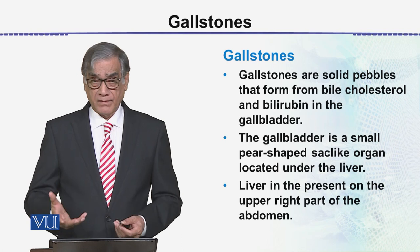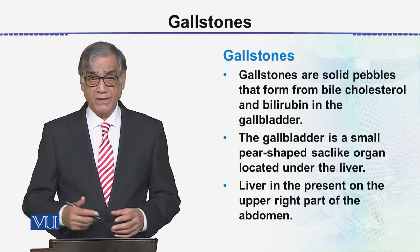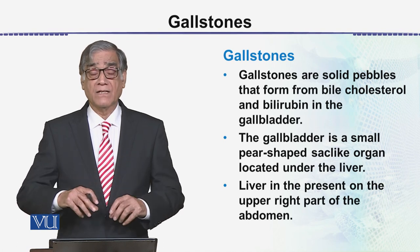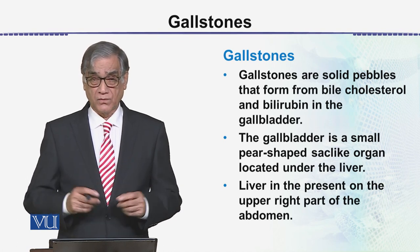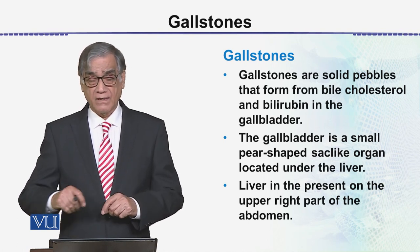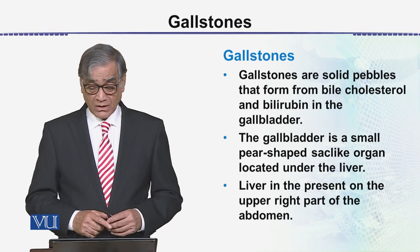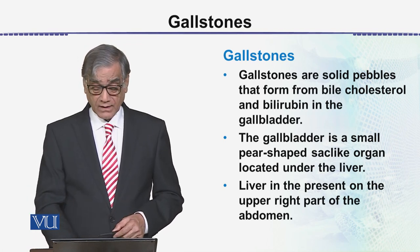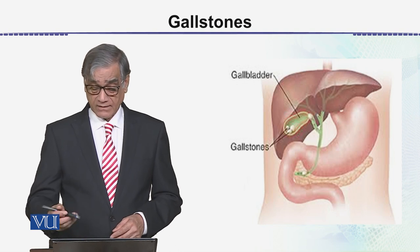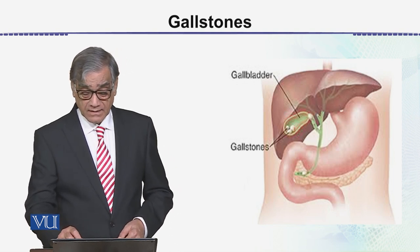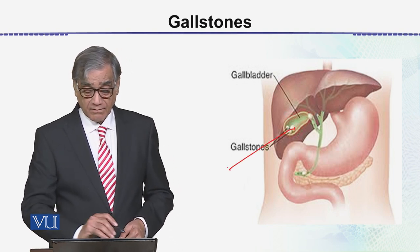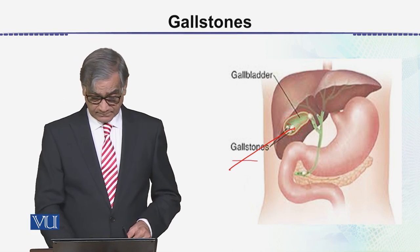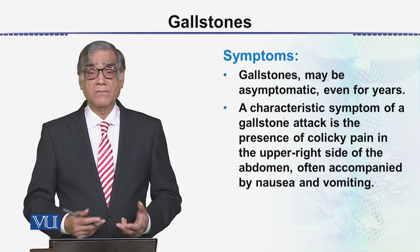What is the meaning of the gallbladder? The gallbladder is present in the upper right part of the abdomen.